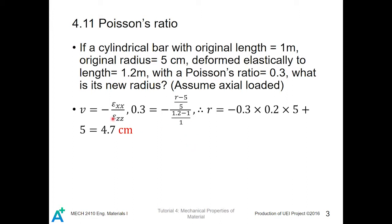And that's why epsilon z-z, which is the strain value at the z-direction, which is the axial direction, is equal to 1.2 minus 1 over 1, which is dimensionless. And that's why we don't need to convert the length value.